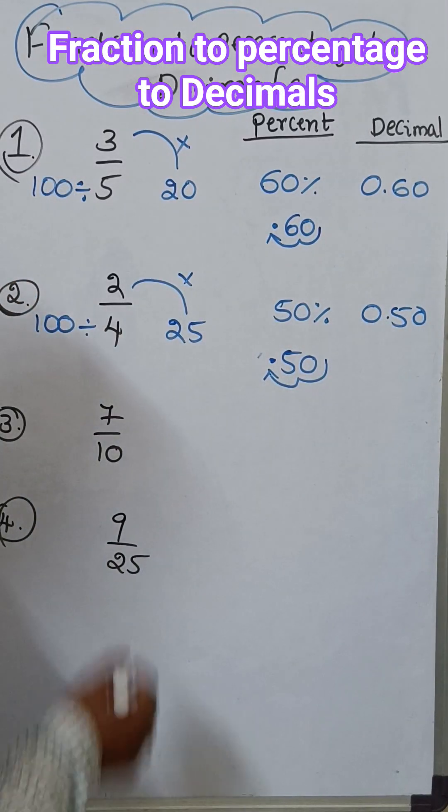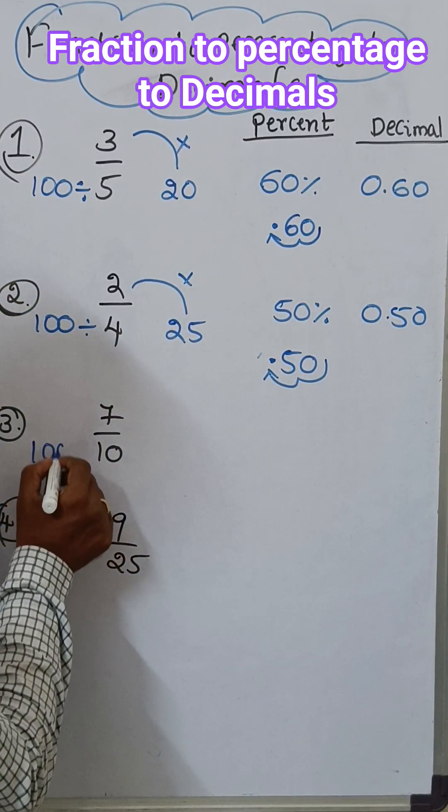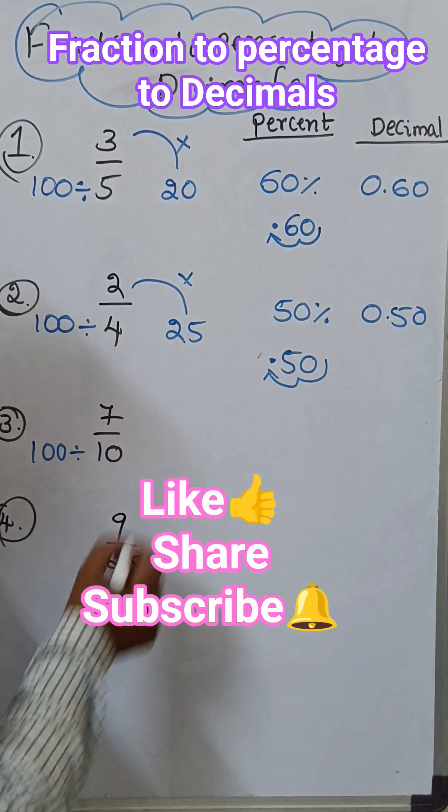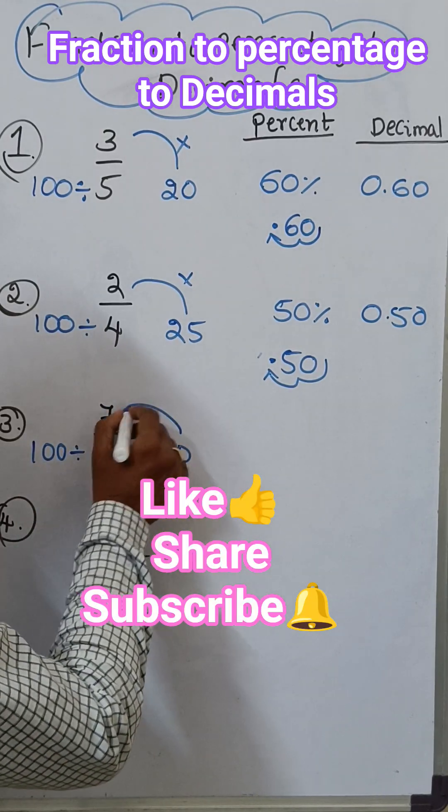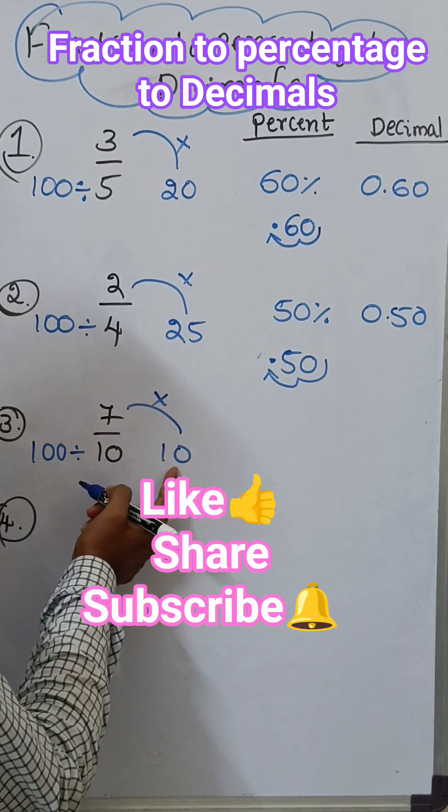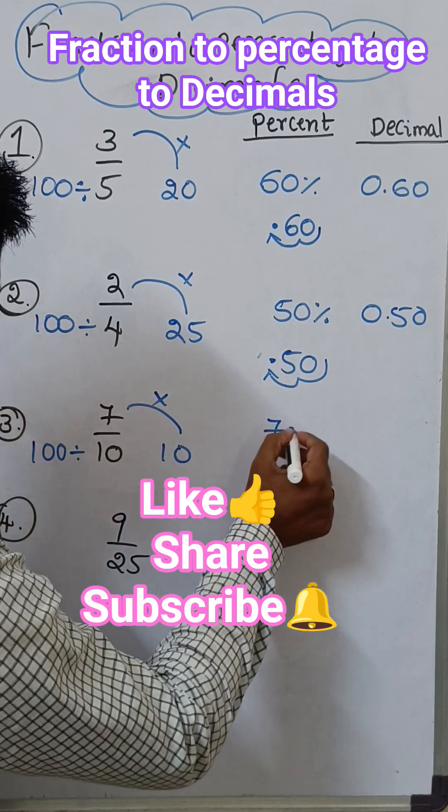That is decimal. Similarly this one, take denominator 100 by 10. 100 by 10 means 10. Multiply these two, 10 times 7 is 70 percentage.